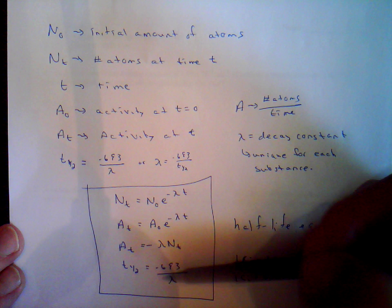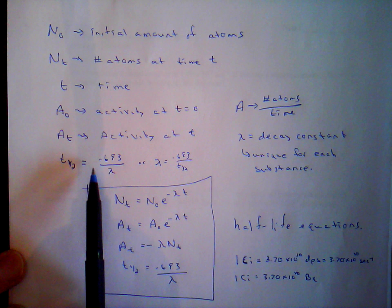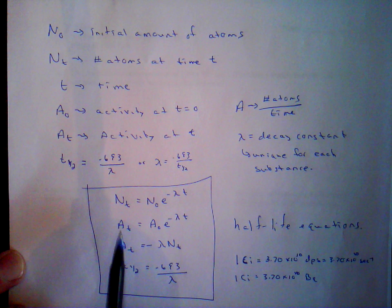Adding a couple of things to this equation sheet: the half-life equals 0.693 over the decay constant. We can rearrange this equation for the decay constant to get another form. Those are the four main equations that we're going to be using.